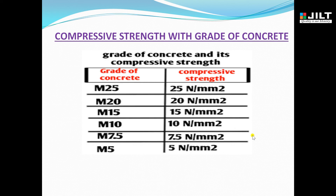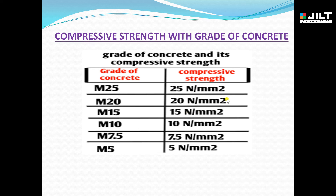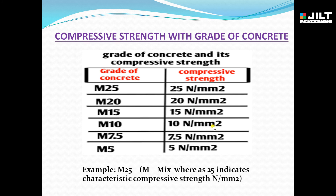Now let us look at the compressive strength with grade of concrete. These are the characteristic compressive strength values: M25 can attain a maximum of 25 N/mm² in 28 days; M20 gives 20 N/mm²; M15 gives 15 N/mm²; M10 gives 10 N/mm²; M7.5 gives 7.5 N/mm²; and M5 gives 5 N/mm². In normal construction, we prefer M20 grade, which gives a maximum compressive strength of 20 N/mm² after 28 days.